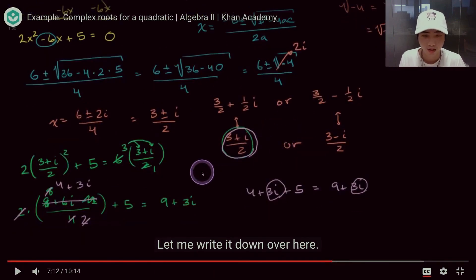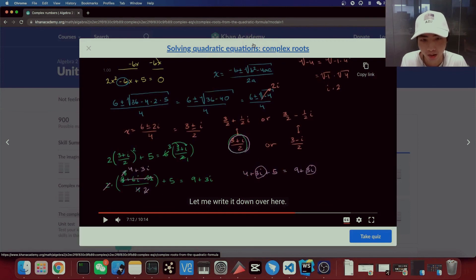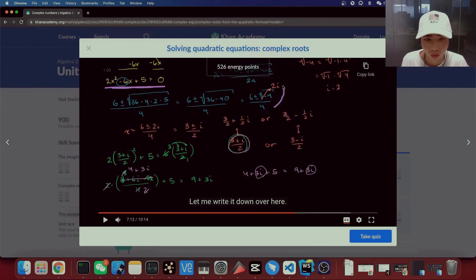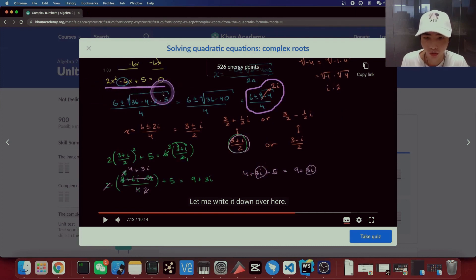What was done here is to calculate the solution for x using the standard quadratic formula: negative b plus or minus the square root of b squared minus 4ac over 2a. After getting x, the result was simplified into complex number form containing the symbol i. Then those answers were substituted back into the original equation to verify correctness.